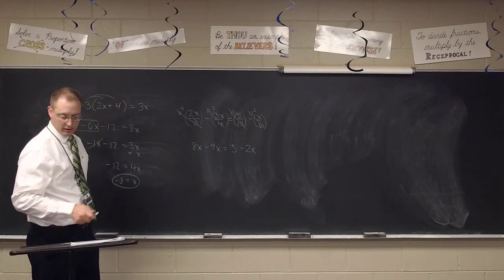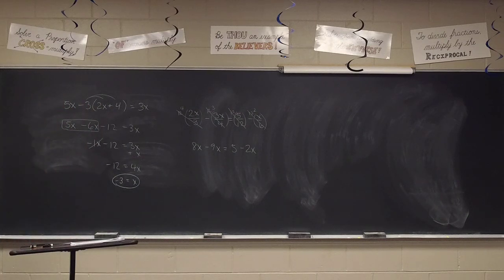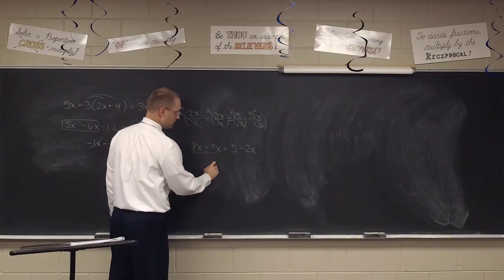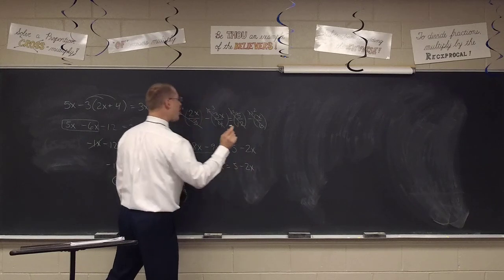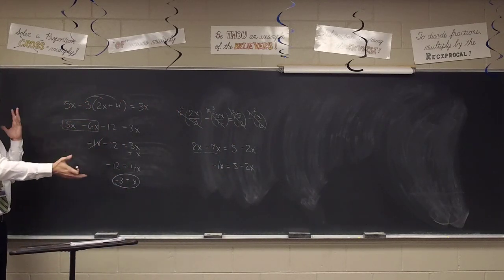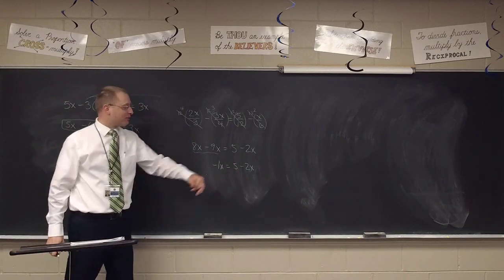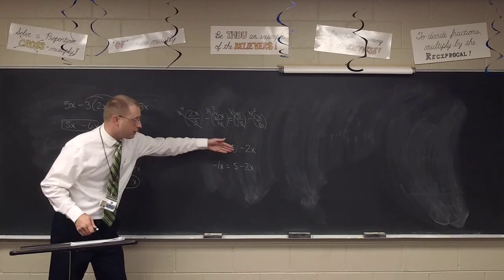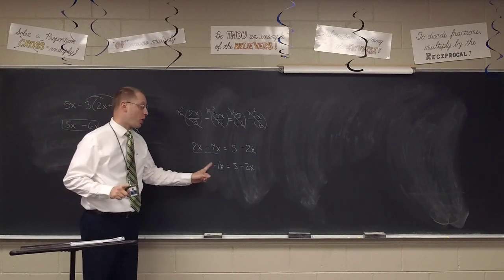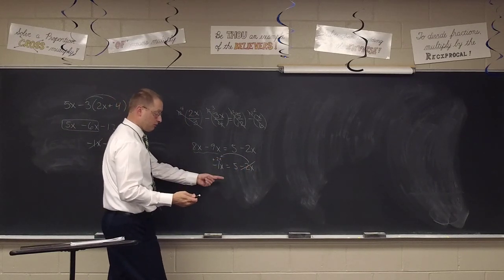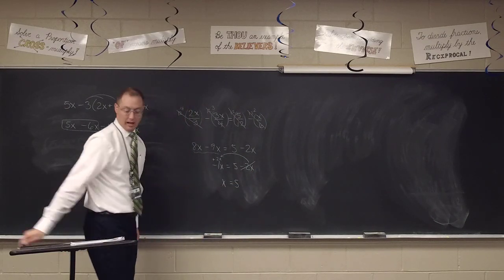Now what? Combine like terms: there's an 8x and a negative 9x. We've combined, and now there's an x on both sides — get rid of the smaller one, which is the negative 2x. Bring it over as a positive 2x, and the answer is x equals 5. We're done.